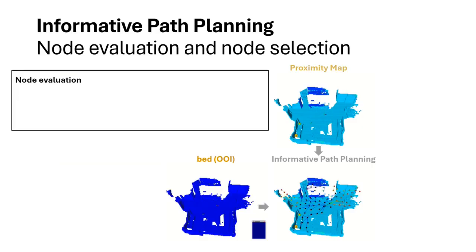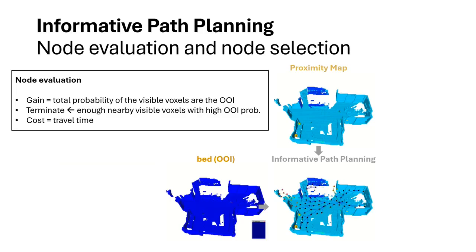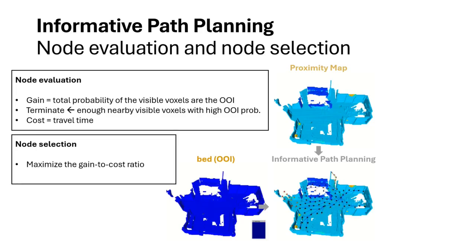Each node in the RRT tree has a gain, calculated as the total probability of the visible voxels being the object of interest. Each node also has a terminating signal, meaning that if it has enough nearby visible voxels with a high object-of-interest probability, the robot can come to this node and trigger a termination signal. Each edge in the tree has a cost representing the travel time along this path. When selecting nodes, the planner maximizes the gain-to-cost ratio and prefers terminating nodes if they exist.